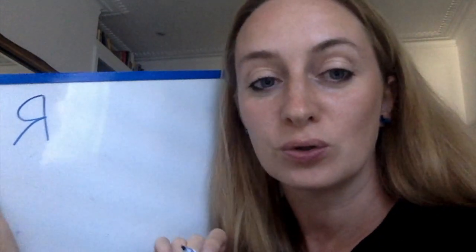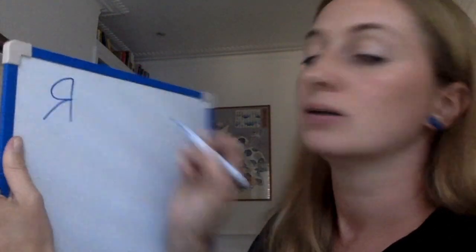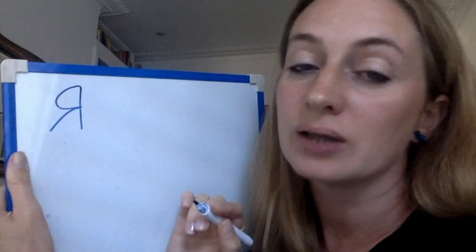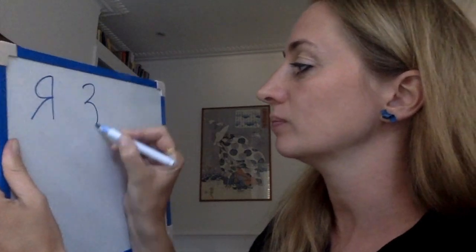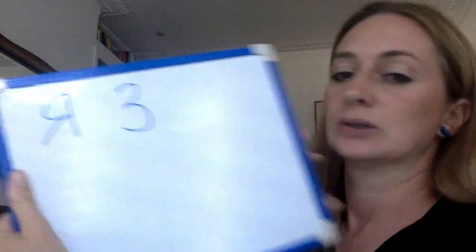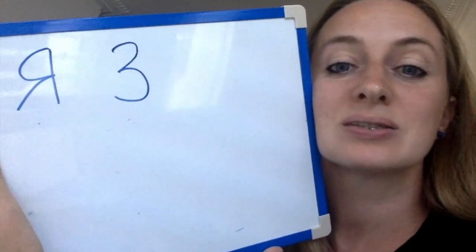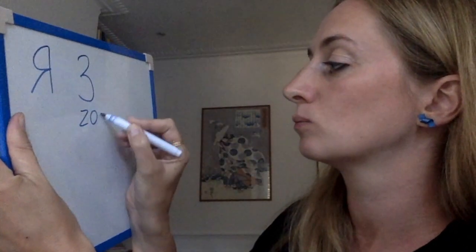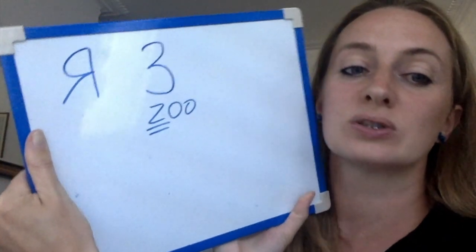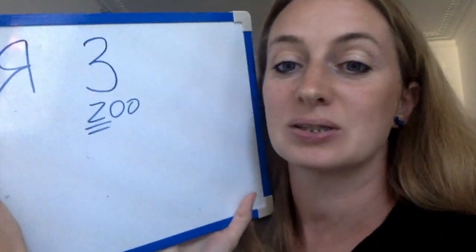The second letter we learn is З. You write it like the number 3 — it's very easy. З. The sound is З, like the English 'Z.' The sound is the same as in English.